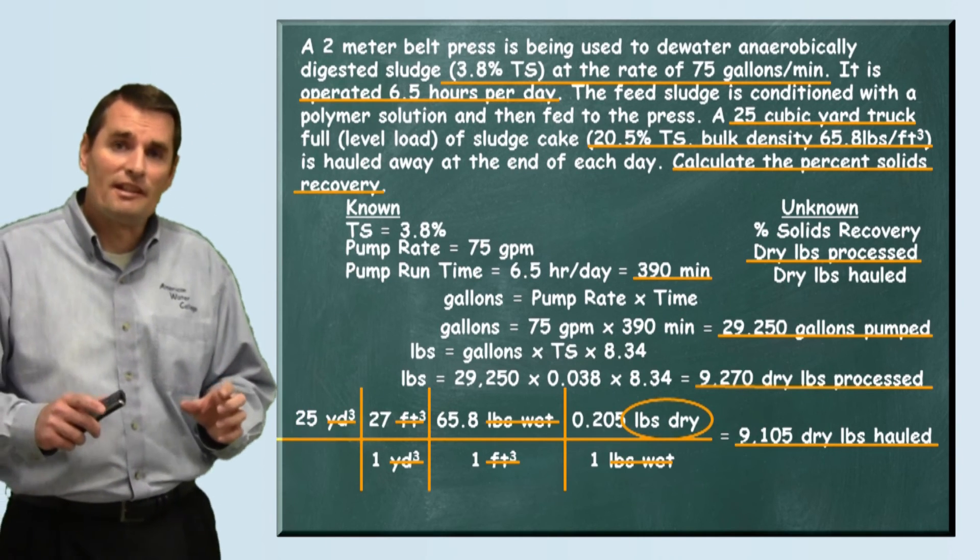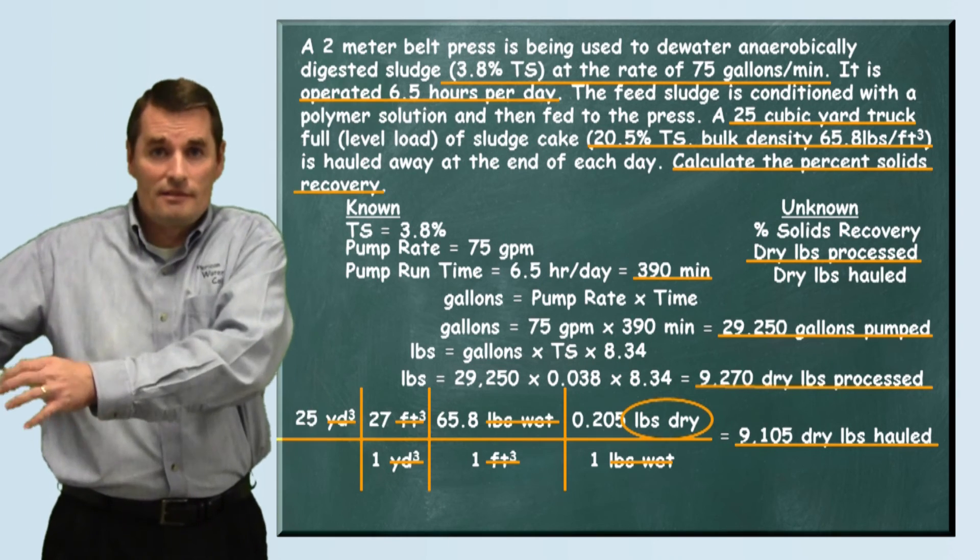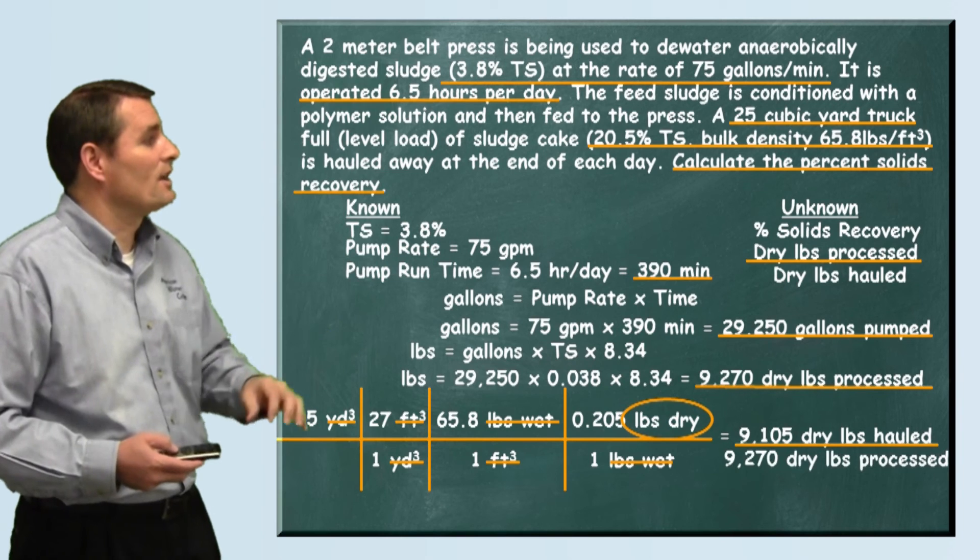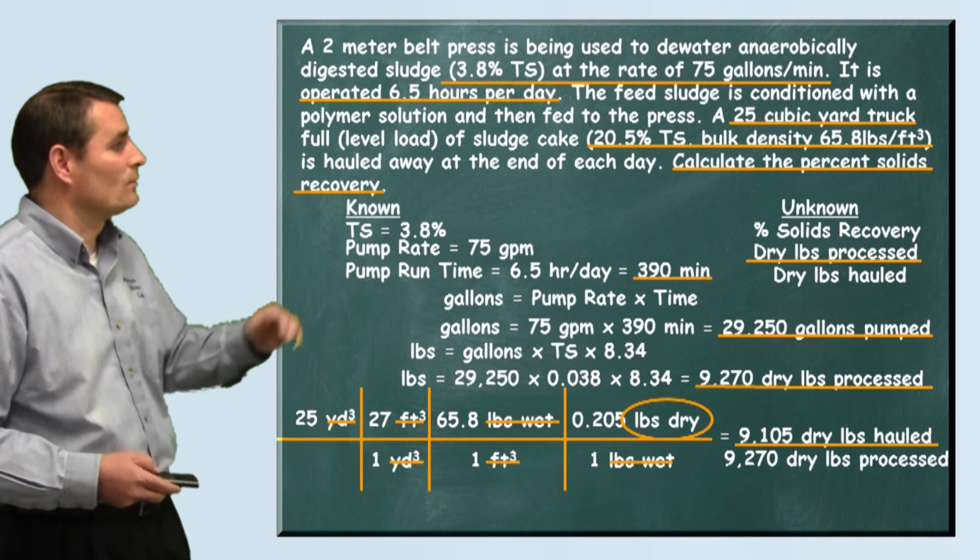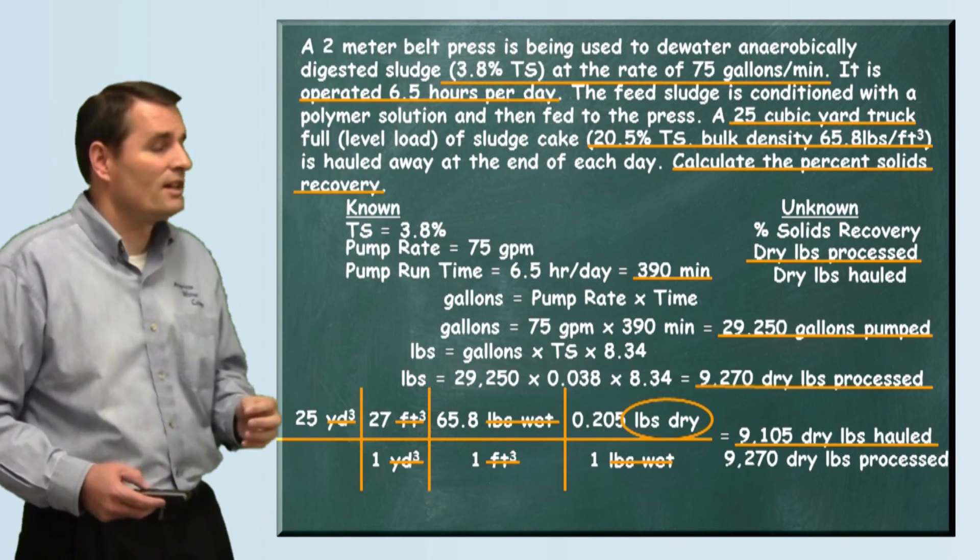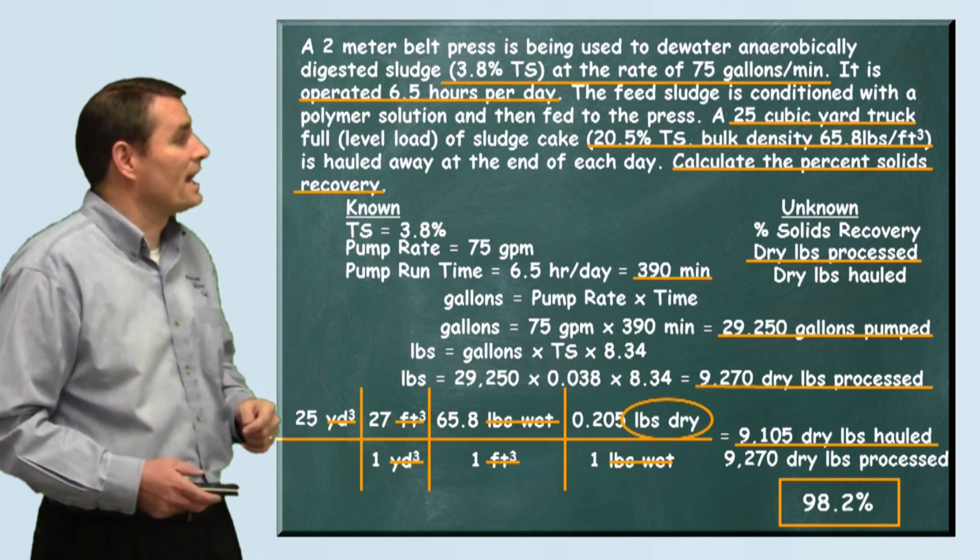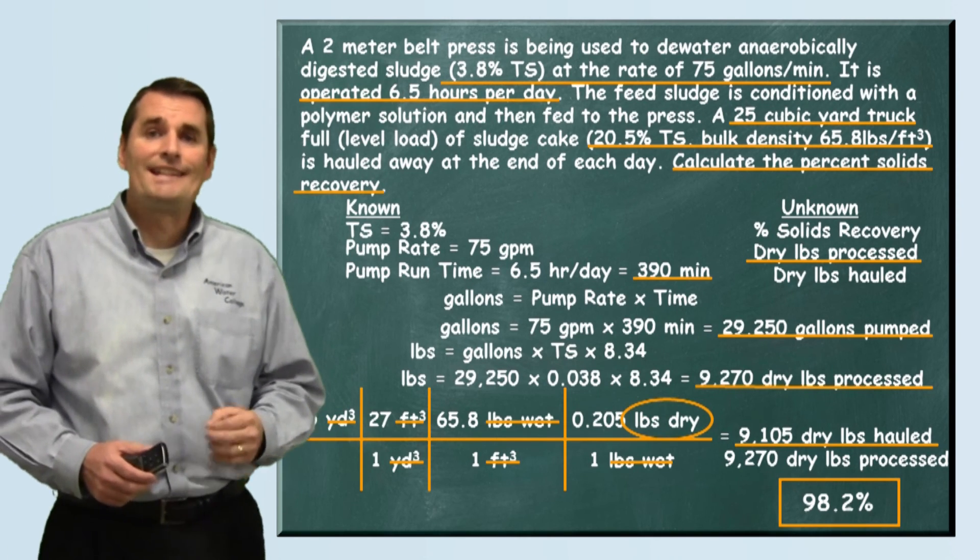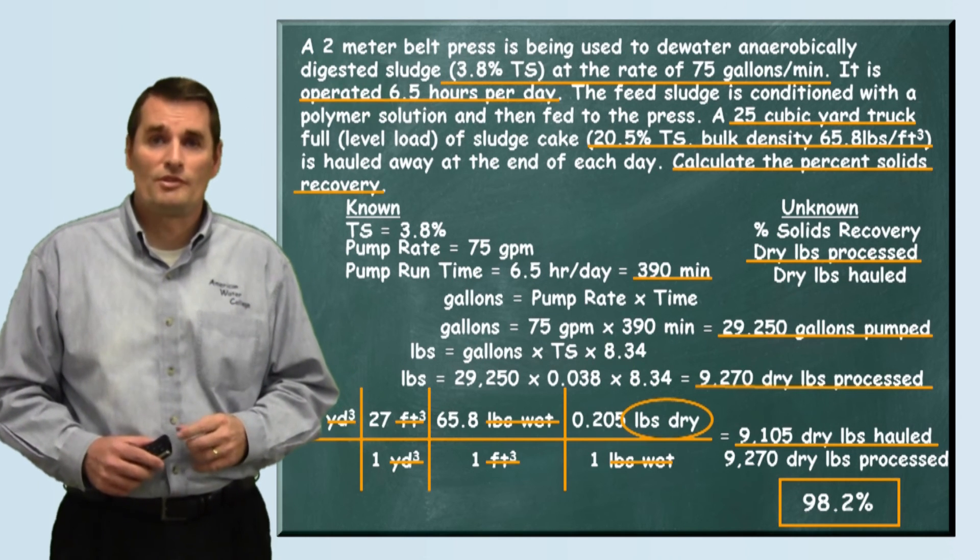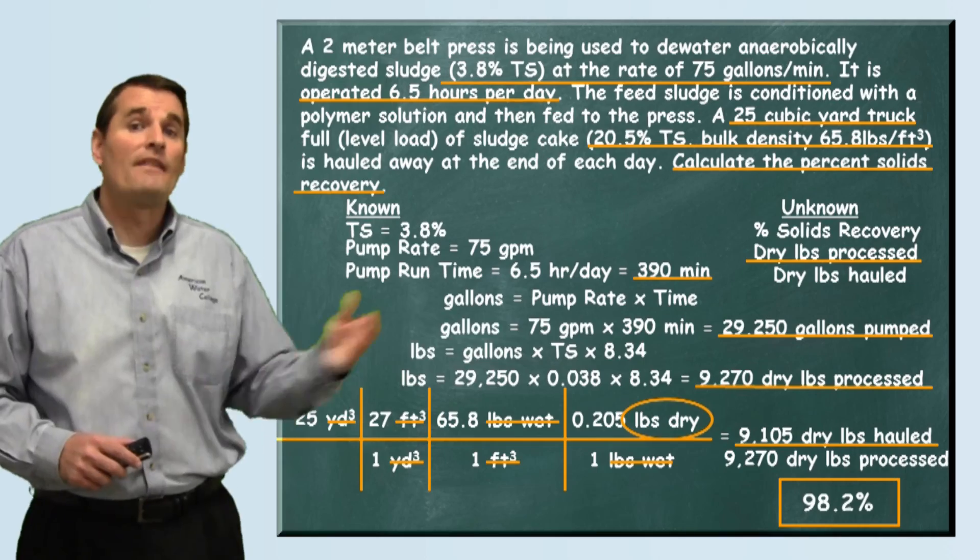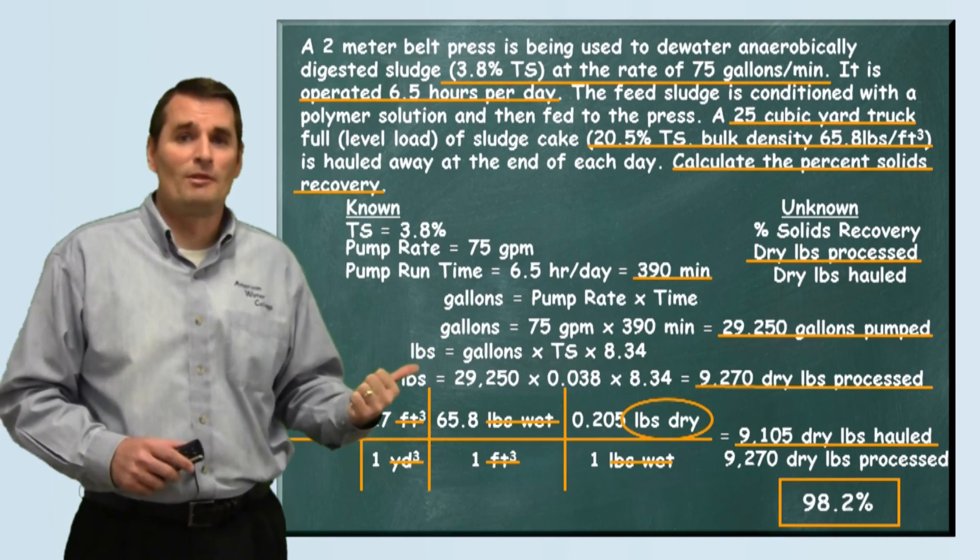Now we've calculated how much was sent to the press and how much was hauled away. We can use these two numbers and divide one by the other. We'll divide the 9,105 by our 9,270. When we do that we see that we recovered 98.2 percent of the total solids sent to the belt press. And that my friend is how this problem is solved.